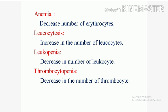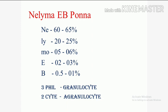Here is an easy way to keep in mind the percentages of leukocytes. The mnemonic is: Ne, Ly, Mo, E, B. Ne denotes neutrophils at 60 to 65%. Ly denotes lymphocytes at 20 to 25%. Mo denotes monocytes at 5 to 6%. E denotes eosinophils at 2 to 3%. B denotes basophils at 0.5 to 1%.